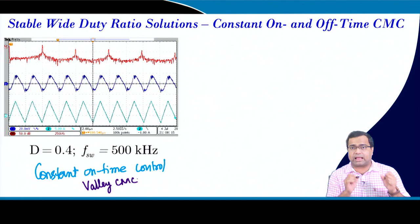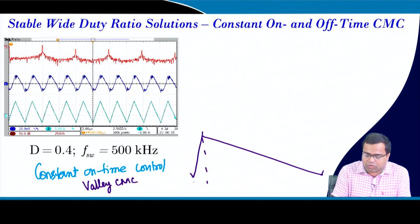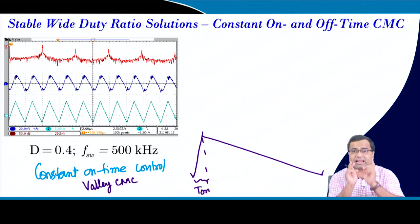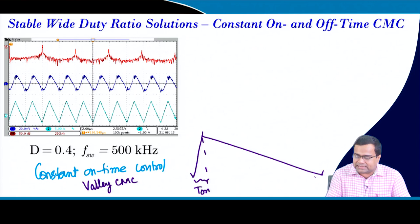For low duty ratio operation, constant on-time control is ideal: the on-time is fixed by a timer, so no comparator action is needed during this interval. This makes it feasible even for very small on-times and high-frequency applications.